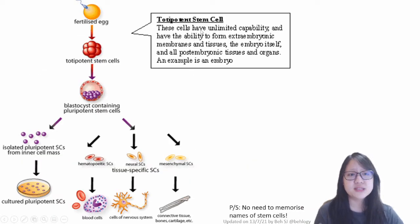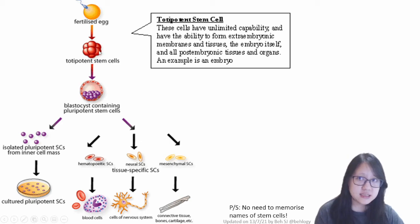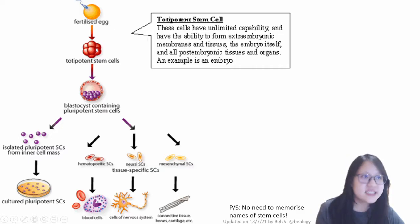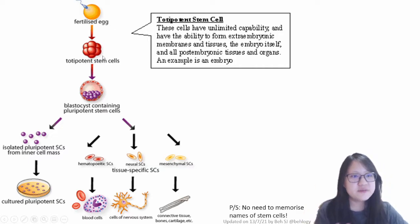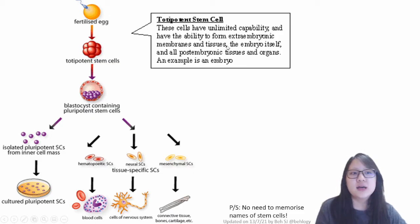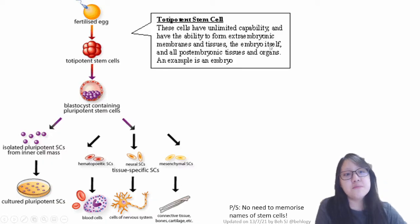An example of a totipotent stem cell is when you were first a tiny, tiny embryo. So a fertilized egg forms the embryo. One cell becomes two cells, becomes four cells, becomes eight cells — it doubles each time. And at this stage, each cell has unlimited capability. They can form extra-embryonic membranes and tissues, including the placenta, the fluid around them, and the embryo itself.